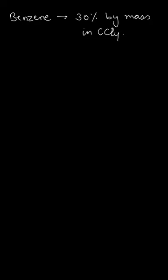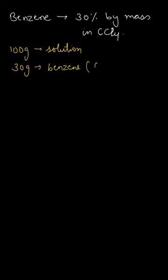30% by mass means that if we are having 100 grams of the solution, the total weight of solution is 100 grams, then 30 grams would be benzene that is C6H6. So 30 grams would be benzene and the rest, that is 100 minus 30, that is 70 grams, would be CCl4, that is carbon tetrachloride.